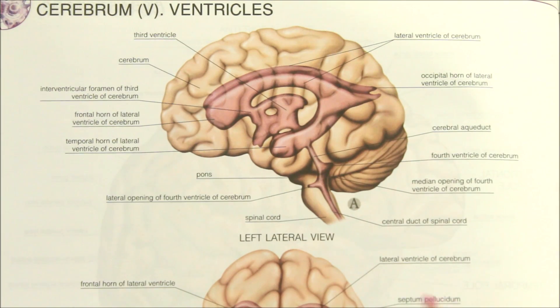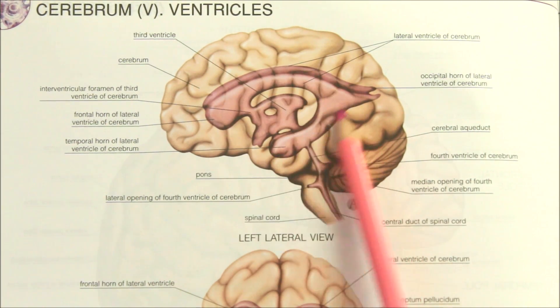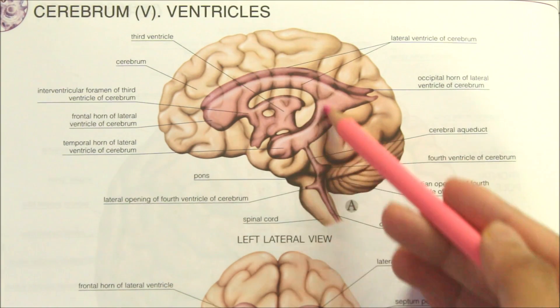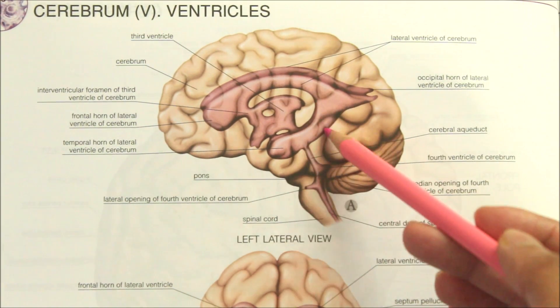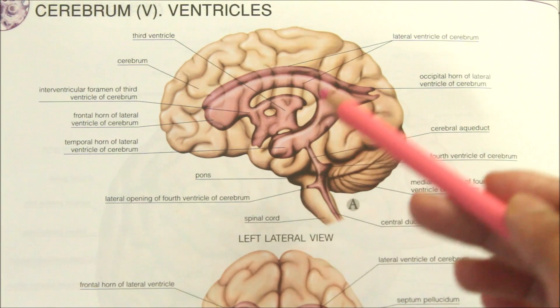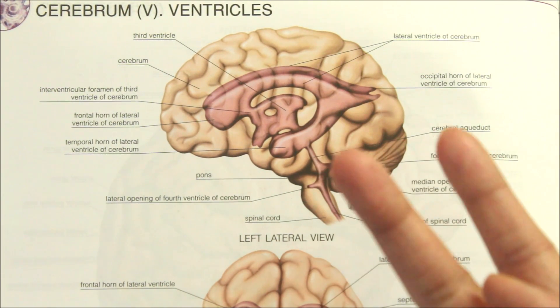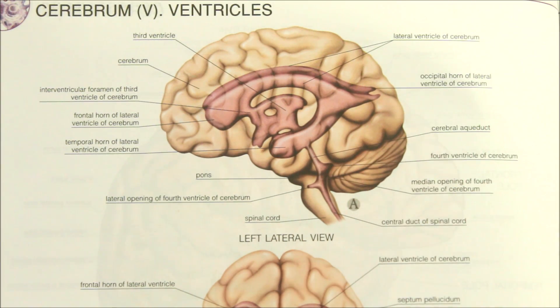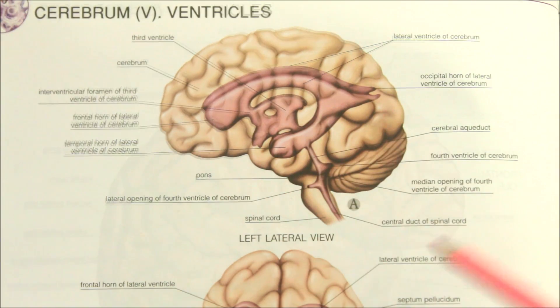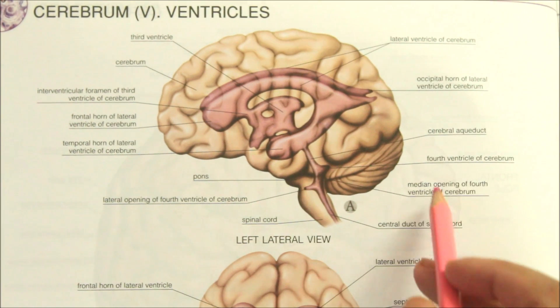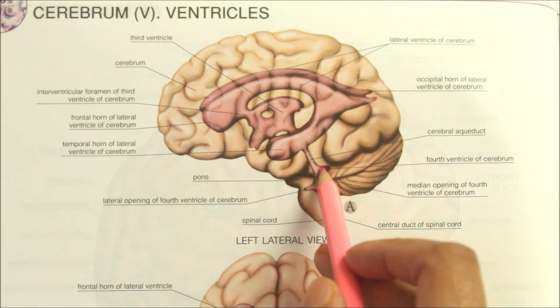Hello friends and welcome to my channel. In this video we'll be learning about the fourth ventricle of the brain. This is a left lateral view of the cerebrum showing the ventricles of the brain. The ventricles are a set of communicating cavities within the brain, responsible for the production, transport and removal of cerebrospinal fluid, which bathes the central nervous system.